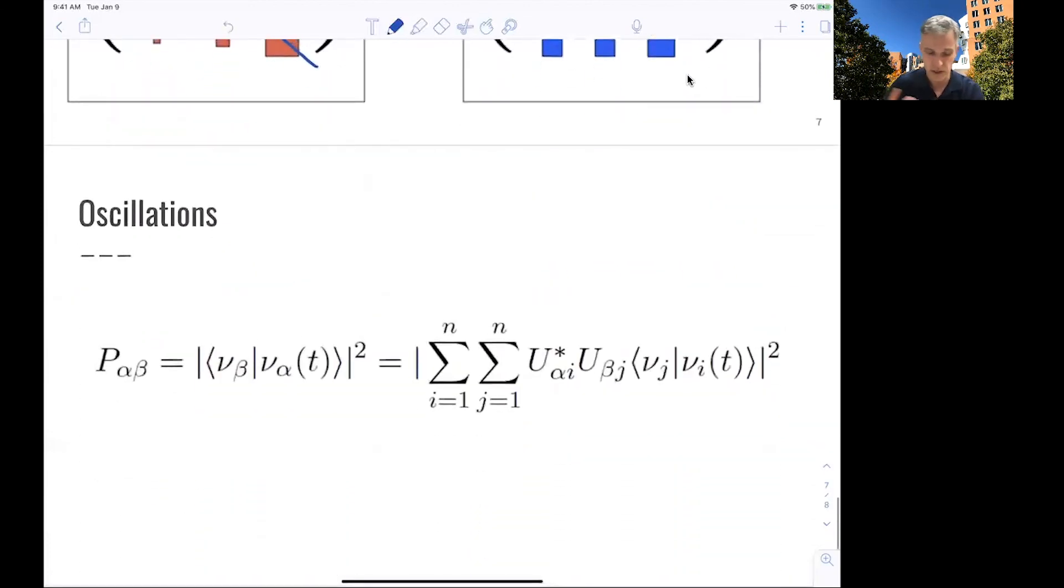So in general, you can write the oscillation from one flavor to another flavor state using this rotational matrix that we have seen. And with that, measure the individual components of the matrix.